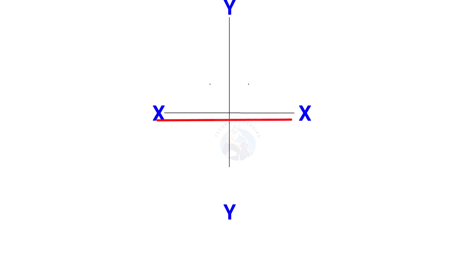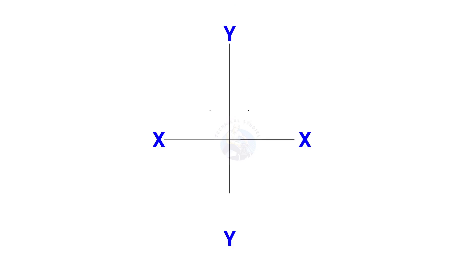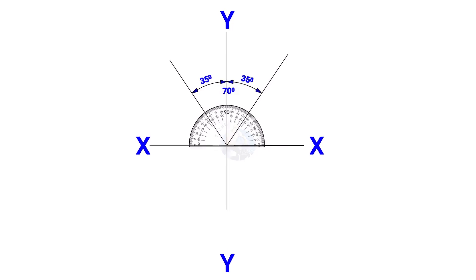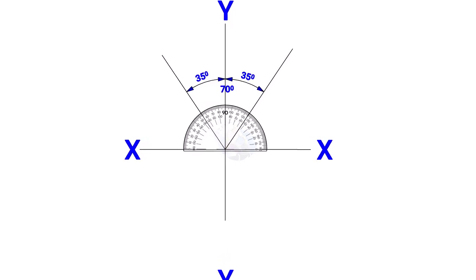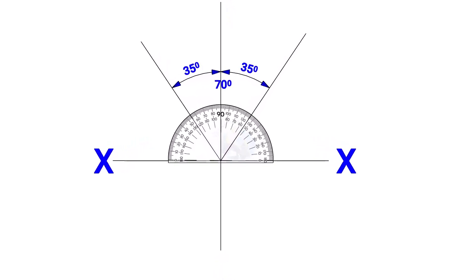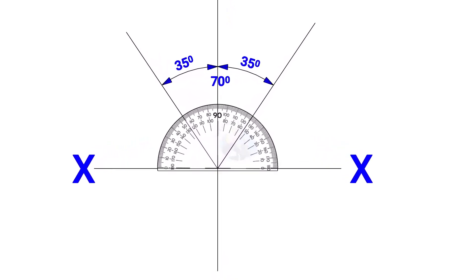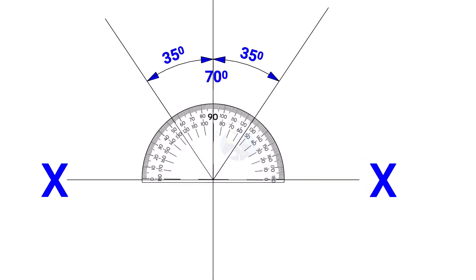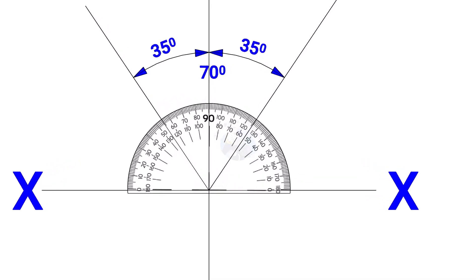Draw line XX and its perpendicular line YY. Since the including angle of the Y branch is 70 degrees, mark 35 degrees on both sides of the axis YY.